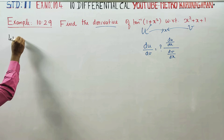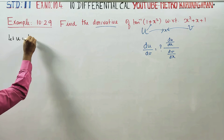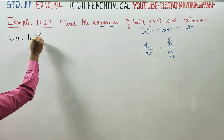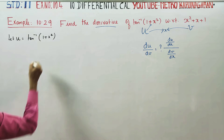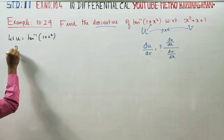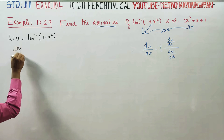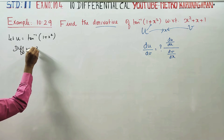Let u be equal to tan inverse of 1 plus x square. We are going to differentiate this with respect to x.